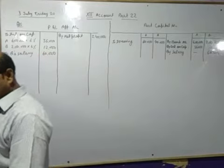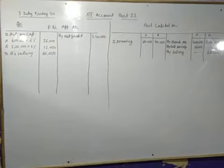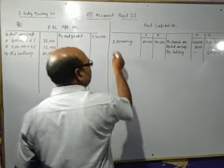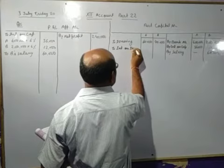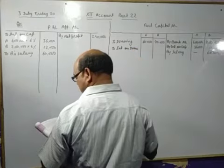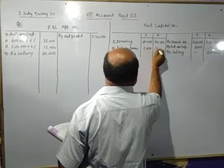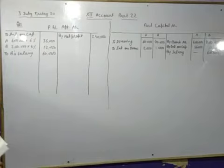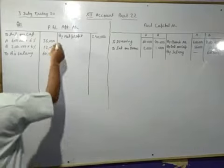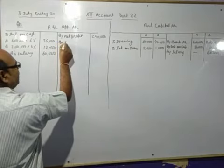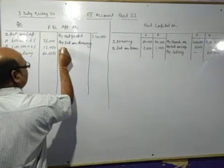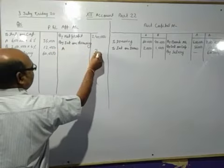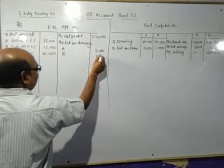Interest on drawing for A being 2,000 and B 1,000. For interest on drawing, first for due entry: partner's capital account debit to interest on drawing. Capital account debit side to interest on drawing — A 2,000 and B 1,000. Second will be closure entry: interest on drawing account debit to P&L appropriation. P&L appropriation account credit side by interest on drawing — A 2,000 and B 1,000.